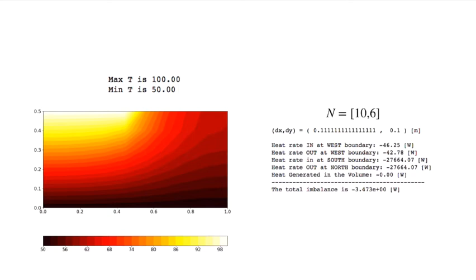And so, for example, my west boundary, which is insulated, is not perfectly insulated with this low spacing. But it's very small, 46 watts, compared to the 27,000 watts, which is going through the north and south boundary. So you can see these are well matched. Out of 27,600 watts, I have an imbalance here of 3.47 watts because of my smaller resolution.